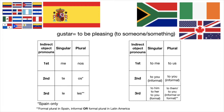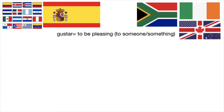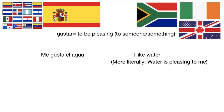So if you want to say a sentence like 'I like water' in Spanish, you would say 'water is pleasing to me.' So you would say: me gusta el agua, which means 'water is pleasing to me.' The word order is a little bit different from what we might expect coming from English, but remember that in Spanish, the object pronoun goes before a conjugated verb.